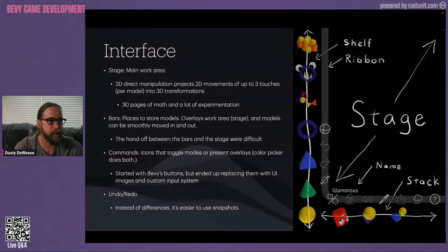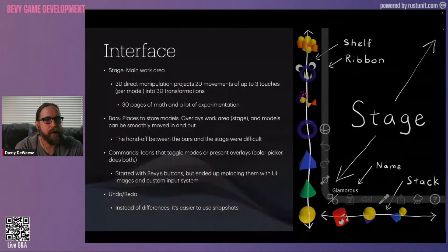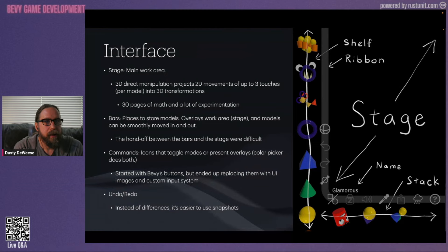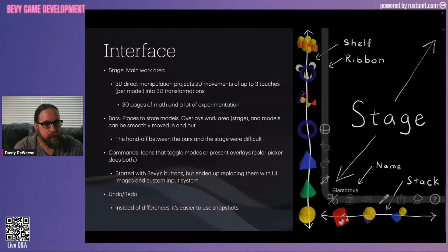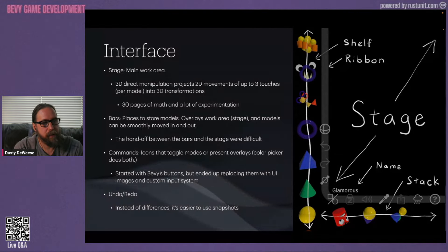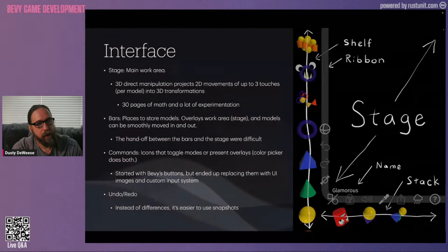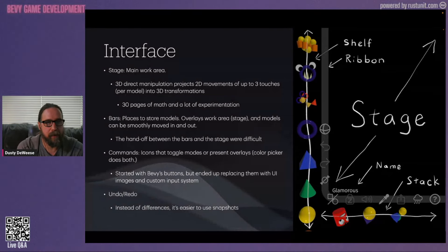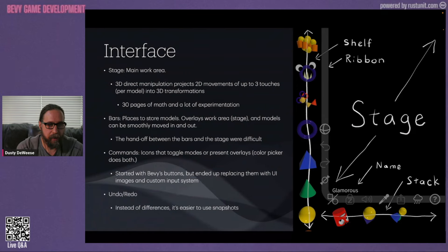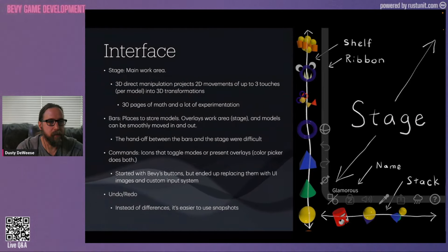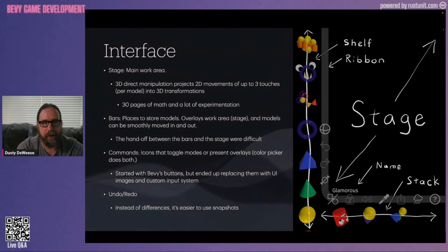You can't see this since it's not animated, but all the models in the bars slowly rotate on their own. For the command icons on the ribbon, I started with Bevy's buttons but ended up replacing those with my own code — they're basically just images and I do all the input control myself. Another thing common to any editor-type app is an undo/redo system. My initial idea was to implement something like a version control system with a chain of differences, but I wasted a lot of time on that. It's just easier to use full snapshots and cycle through those.